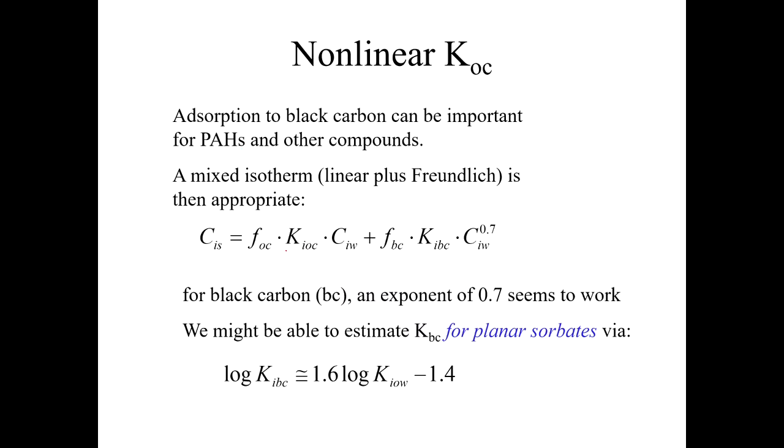You always have to remember that it could be that KOC is not the only thing going on. In the real world, you might have, for example, black carbon or something else in your system that's an important sorbent. For many sediments, we find that an equation of this type usually does a pretty good job of describing sorption because you're describing sorption to the organic carbon and to the black carbon. But then the problem is I need a KBC. FBC is easy to measure—you're measuring the fraction of black carbon—but I need a KBC. What's the equilibrium constant for sorption to black carbon? People have tried to do this. Here's one equation they've come up with. I'm not saying this is definitive, it's just an example. People have tried to come up with equations to relate KOW to K for black carbon. You might be able to do that if you can't look up a K specifically for black carbon for your chemical, which let's face it, you probably can't. You might be able to estimate it from KOW as well.